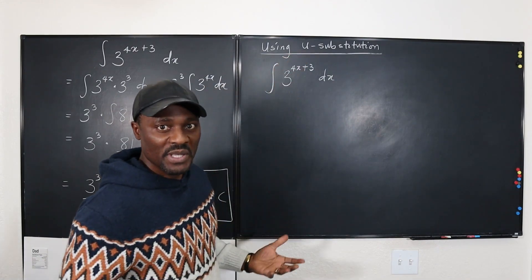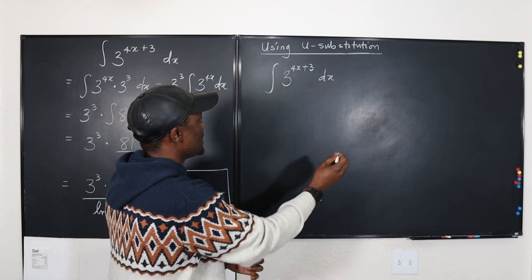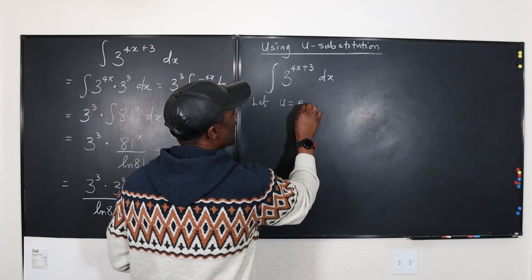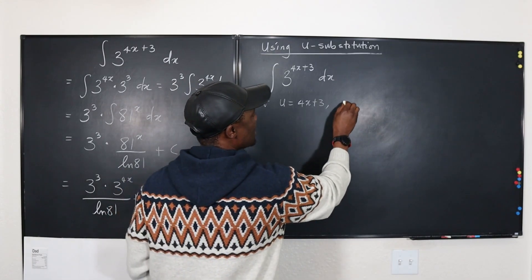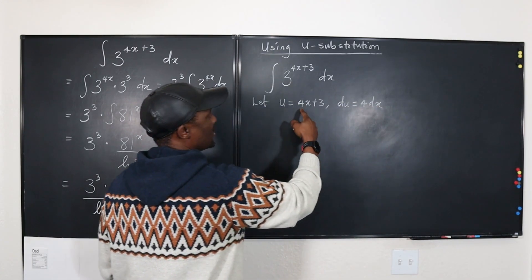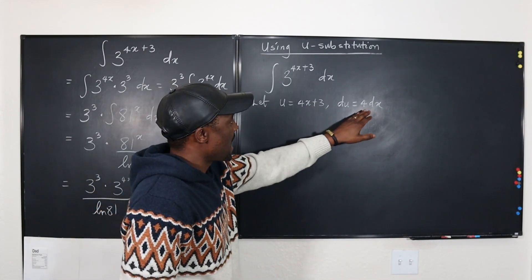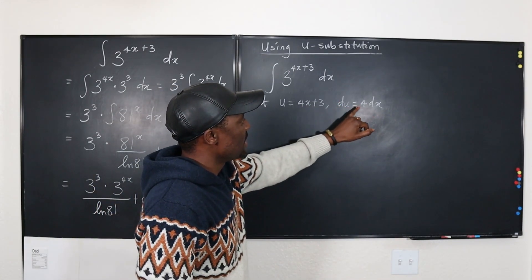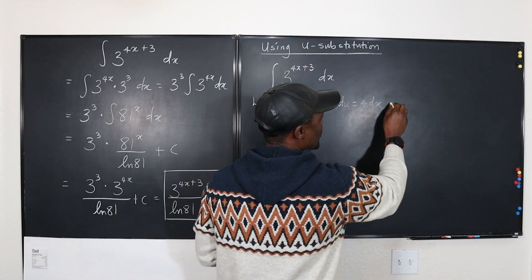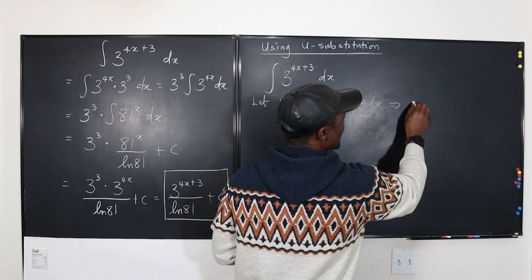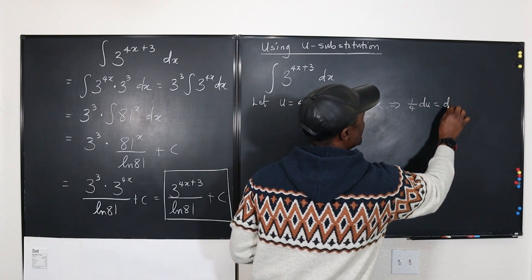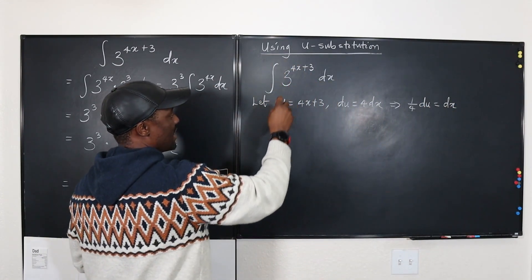I'm going to say the more complicated portion, the top part, is u. So let u be equal to 4x plus 3. That means that du is going to be 4 dx. I can say one-fourth of du is equal to dx because that's what I want to replace, which implies that one-fourth du is equal to dx.